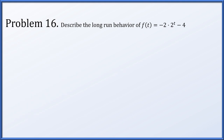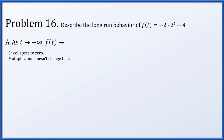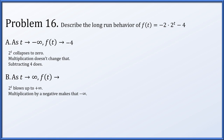For the last problem, describe the long-run behavior of f(t) = -2·2^t - 4. As t goes to negative infinity, 2^t collapses to 0, multiplication by -2 keeps it at 0, but subtracting 4 gives f(t) going to -4. As t goes to positive infinity, 2^t goes to positive infinity, multiplied by -2 gives negative infinity, and subtracting 4 does not change that — so f(t) goes to negative infinity.